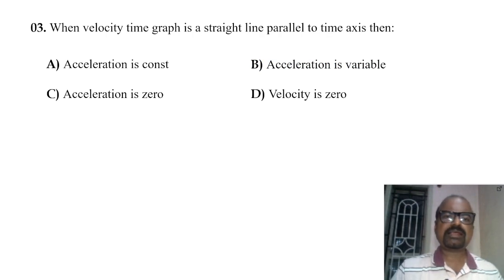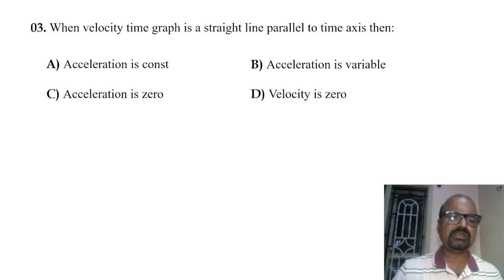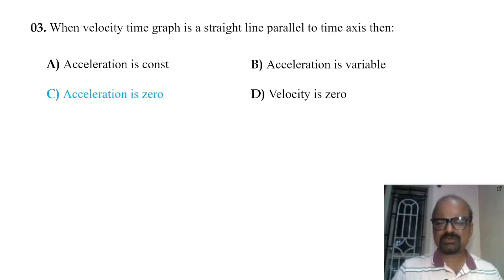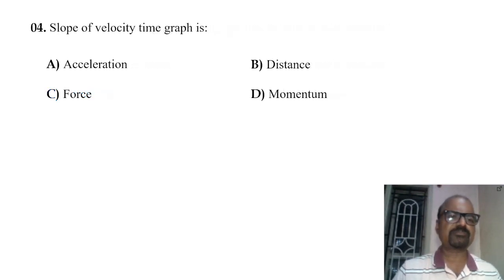When the velocity-time graph is a straight line parallel to the time axis, acceleration is zero. The velocity is constant, meaning there is no change in velocity, so acceleration is zero.